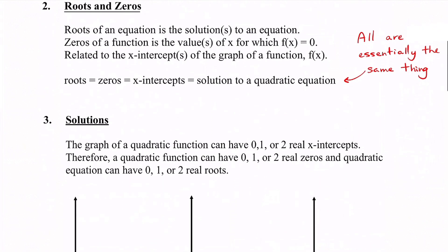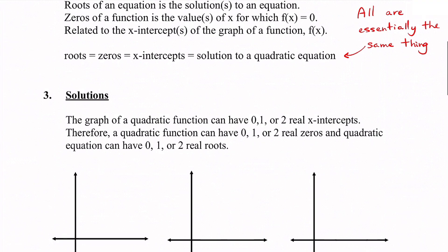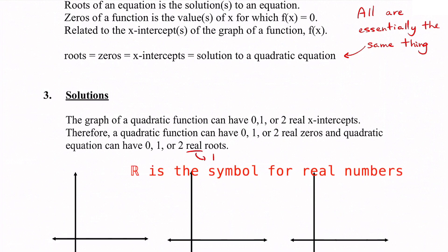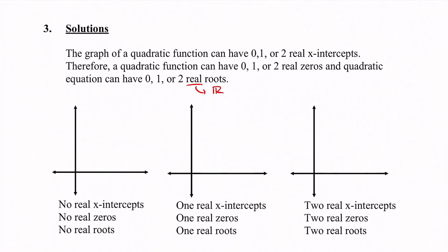For the number of solutions: the graph of a quadratic function can have zero, one, or two x-intercepts — which is the same as saying it can have zero, one, or two zeros, and zero, one, or two roots. We are going to draw different scenarios on our graph. The first scenario is where we have no real roots, no zeros, and no x-intercepts — that is a graph that never crosses the x-axis.